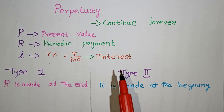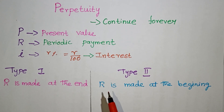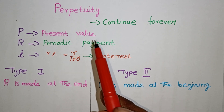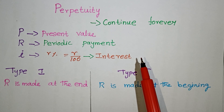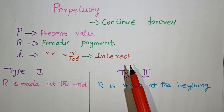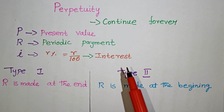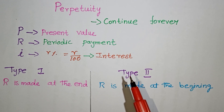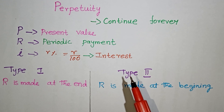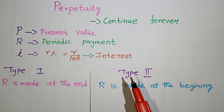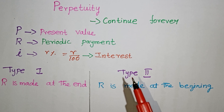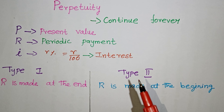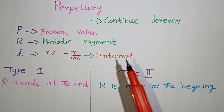Hi students. This video covers Perpetuity and how to apply it, for Class 12 students. Perpetuity is continuous forever. For example, if you own two houses and have a rental amount, you will receive a monthly amount. It continues forever. That is Perpetuity.